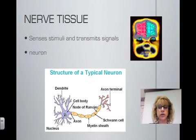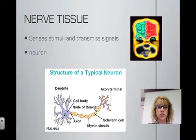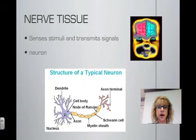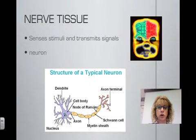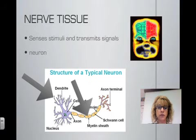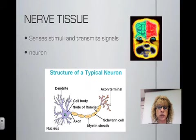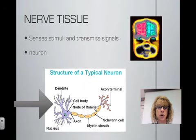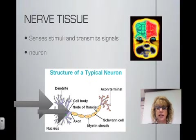The third type of tissue in the body is nerve tissue. Nerve tissue sends stimuli and transmits signals from one area to another. This is a very high-speed form of communication within the body. A nerve cell is called a neuron, and as you can see from the diagram, the cell body contains the nucleus with multiple branches coming off of it. Those branches are called processes or extensions, and there are two types: the dendrites and the axon. The dendrites transmit impulses coming into the nerve cell, and the axon transmits impulses leaving the nerve cell.